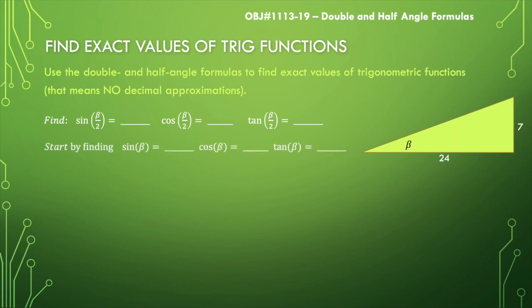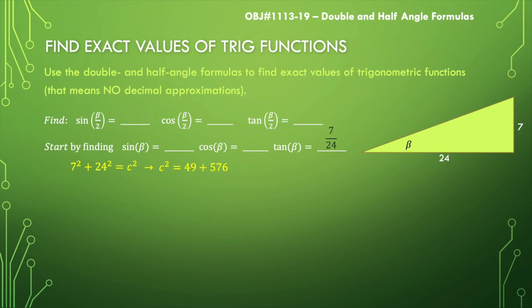We know immediately that tangent of beta is going to be 7 over 24. Then we'll solve for what we're missing — the hypotenuse. So 7 squared plus 24 squared equals c squared, which gives us 49 plus 576 equals c squared, so c squared equals 625. Since we're looking for the hypotenuse, it's the positive square root of 625, which is 25. Once we know the hypotenuse is 25, sine of beta is 7 over 25, and cosine of beta is 24 over 25.